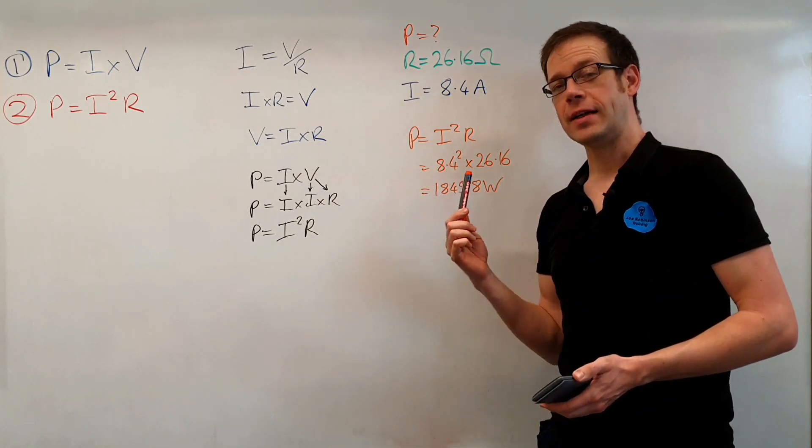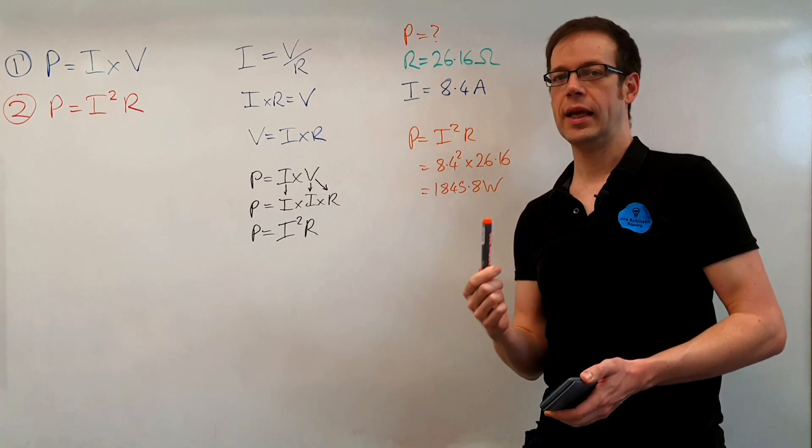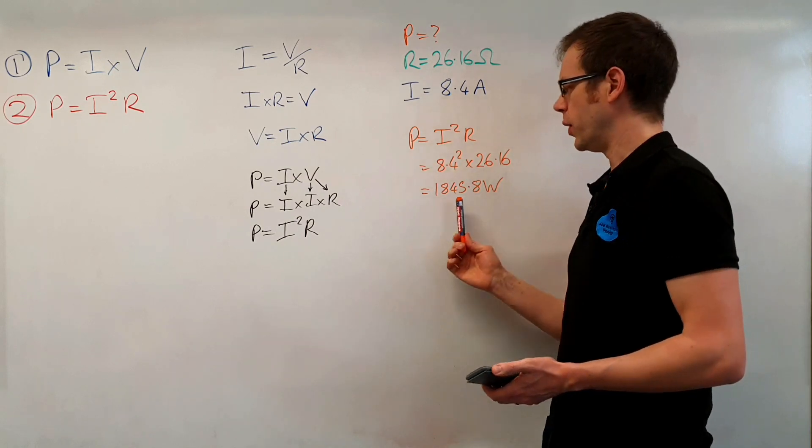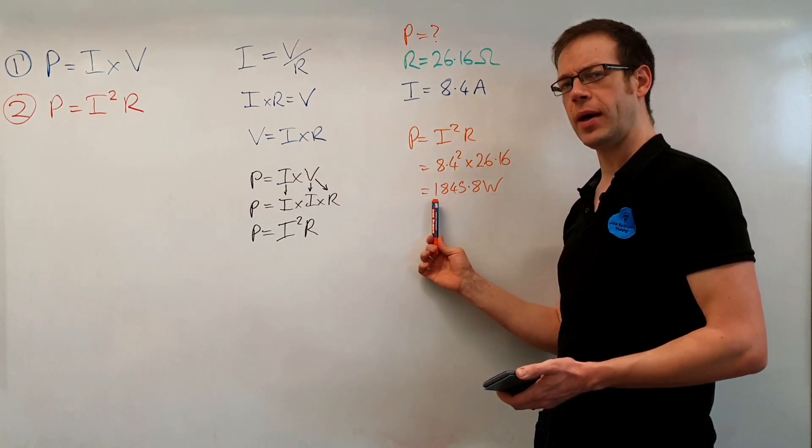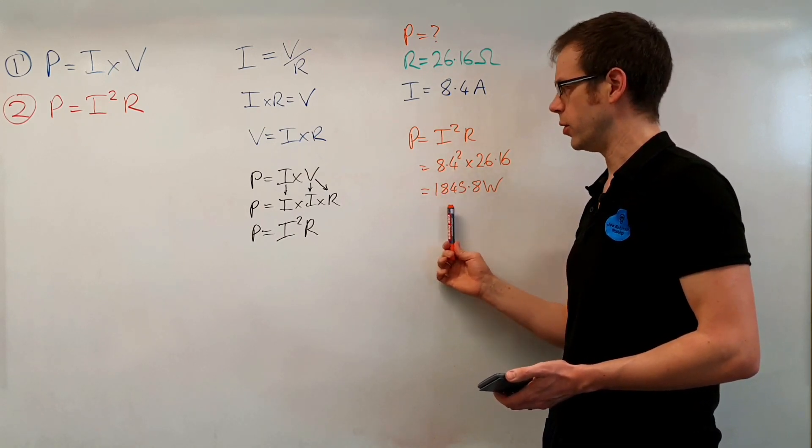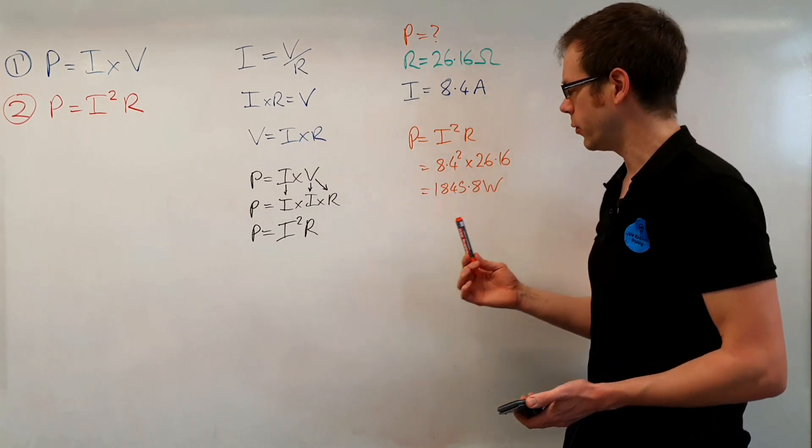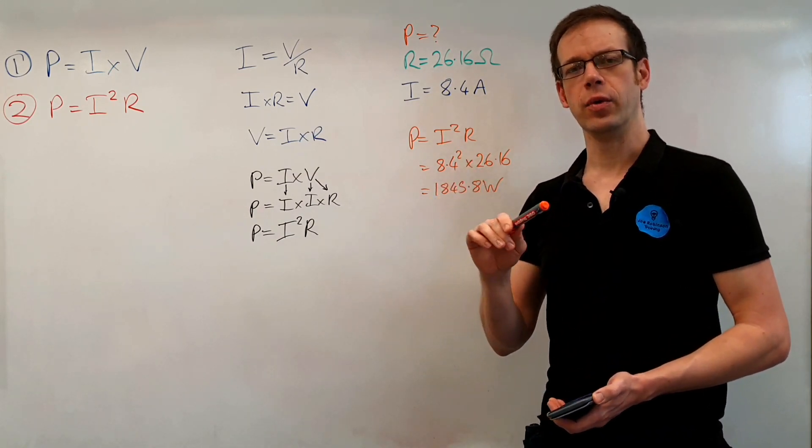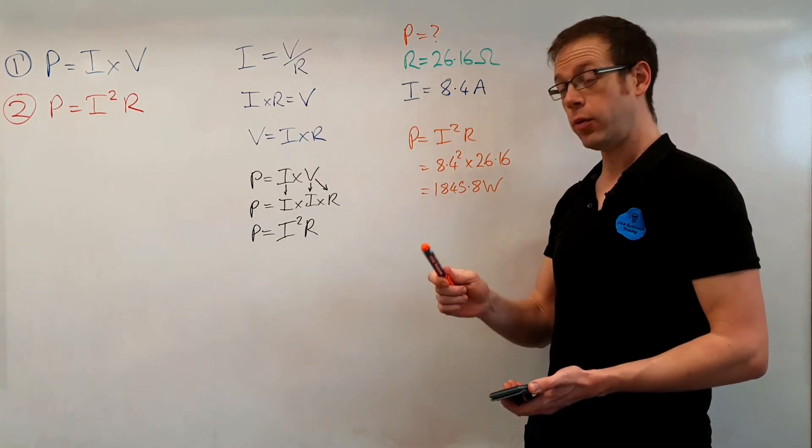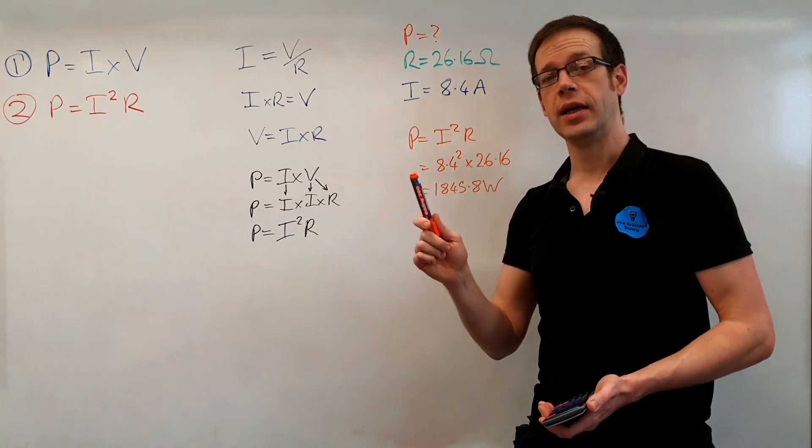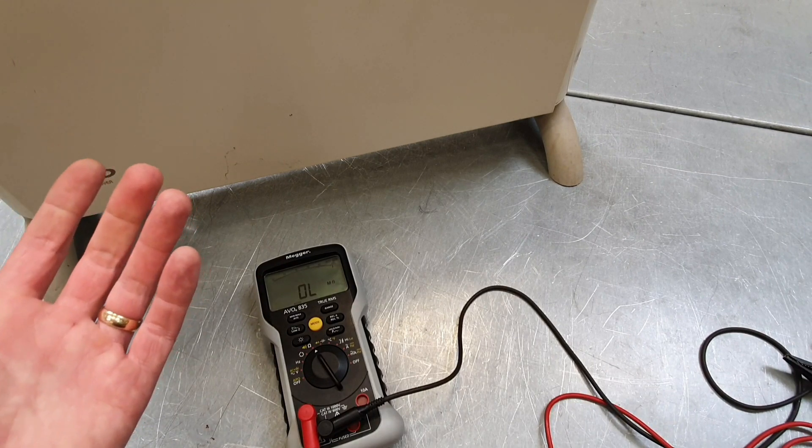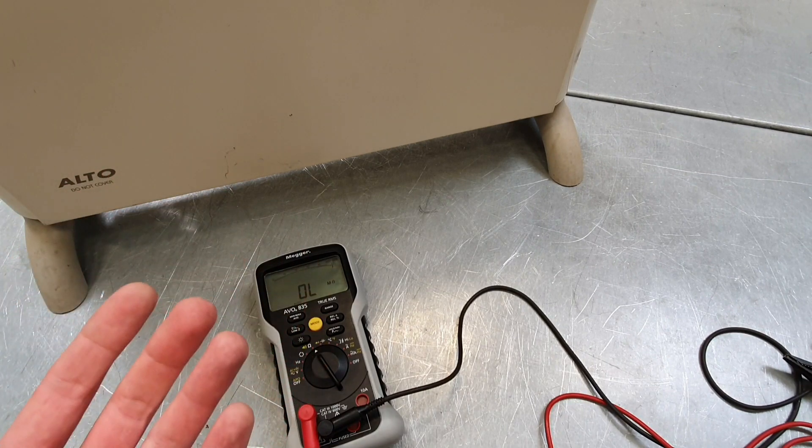Now if you remember that heater that we used was a 2 kilowatt heater. So we had 2 kilowatts there. You may also be thinking well in the video prior to this we actually came out with a power rating a little bit above 2 kilowatts here. We're a little bit below 2 kilowatts so we're just below 2,000 here. So why do you think that might be? Why do you think we might have a slightly lower value here than we measured or calculated in the previous video? Well to help us understand that let's head back down to the workshop and we'll have a little bit of a further explanation.